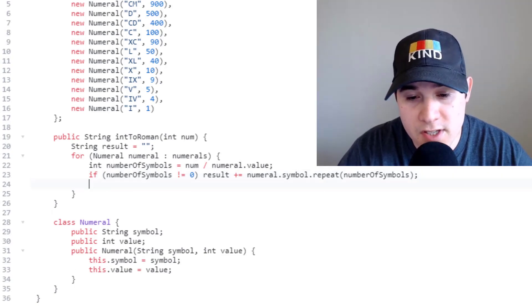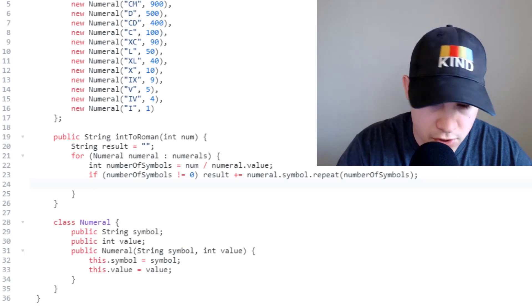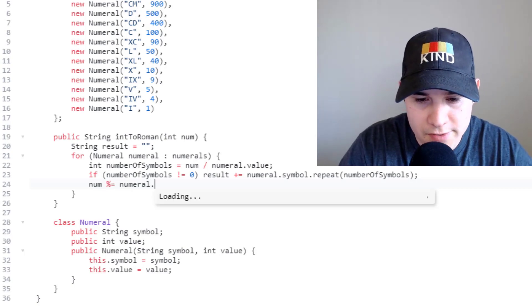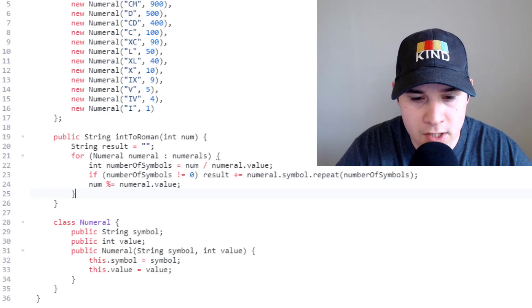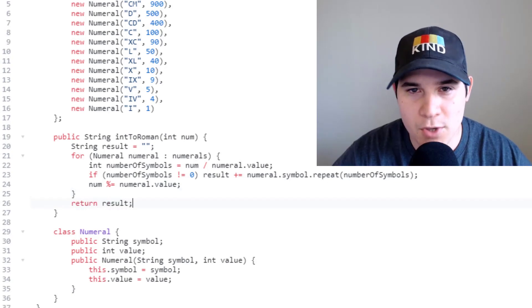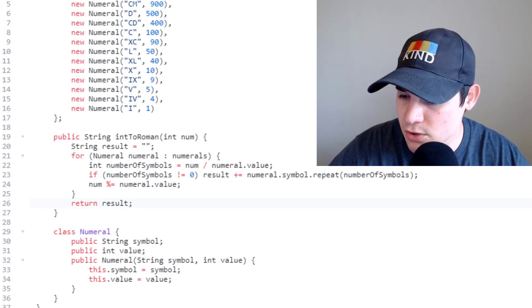And then when we come out of this if statement this is where we're going to chop off the most significant digit. To do that we'll say num mod equals numeral.value. And then finally outside of the for loop we just return our result. As you can see not much code to implement but it does involve a little bit of math. So let's make sure the solution works.